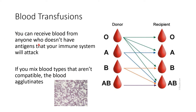You can receive blood from anyone who doesn't have antigens that your own immune system is going to attack. If you have type A blood, you can receive blood from someone with type A blood or type O blood, because type A has only A antigens and type O has no surface antigens at all, so your immune system won't attack them. You cannot receive blood from someone with type B or AB blood, because those B antigens would trigger your anti-B antibodies to attack.